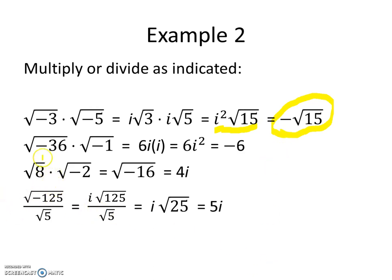The square root of negative 36 is 6i, and the square root of negative 1 is just i. When we multiply those, we get 6 times i squared. Since i squared is negative 1, negative 1 times 6 leaves us with negative 6. Next, the square root of 8 times the square root of negative 2 equals the square root of negative 16. The square root of 16 is 4, and the square root of negative 1 is i, so the answer is 4i.